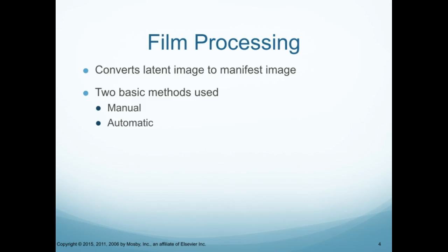Film processing converts the latent image. The latent image is the image that has not been processed, cannot be seen by our eyes yet, but we take that latent image and make it into the manifest image. There are two basic methods used: manual and automatic. Manual is your good old wet readings where we actually did that by hand, and automatic processors have all the gears — we put the unprocessed film in one side and it comes out processed on the other side.